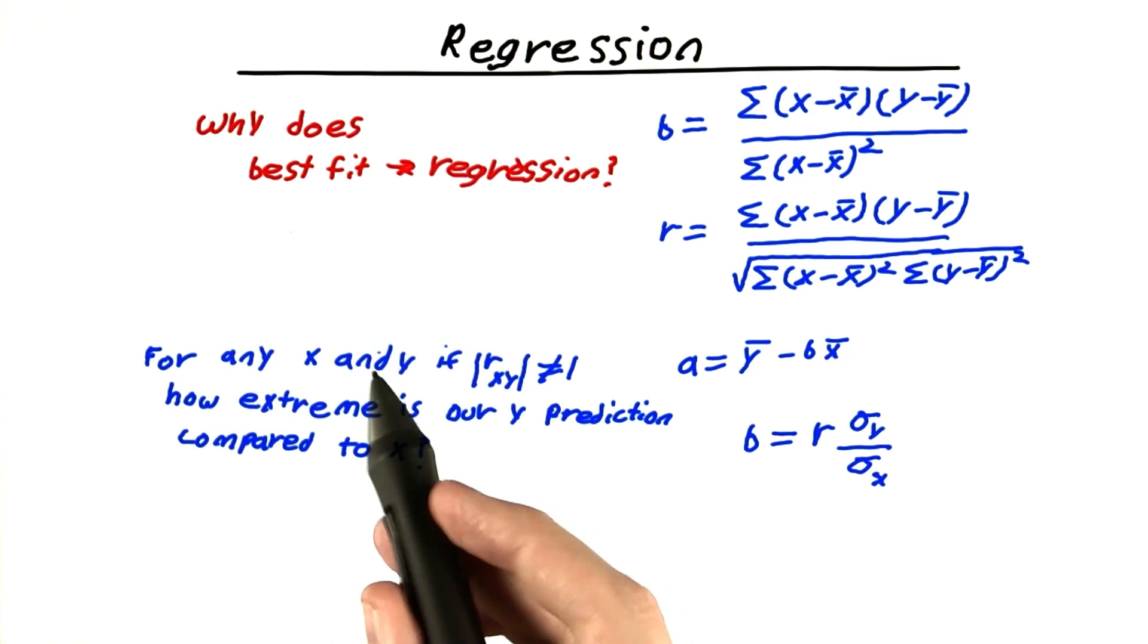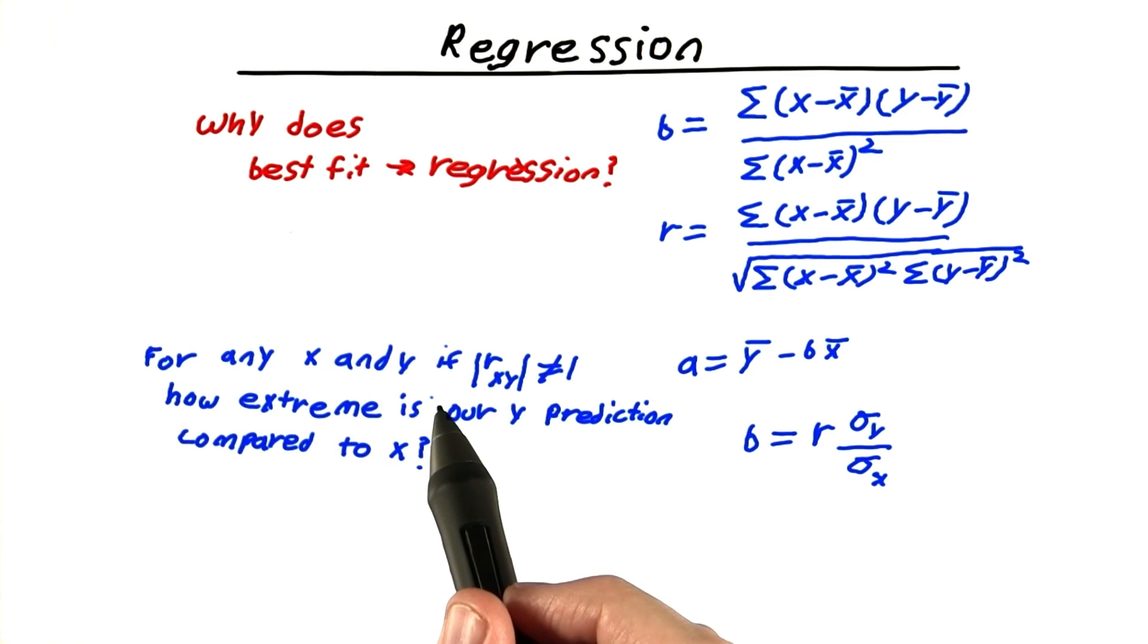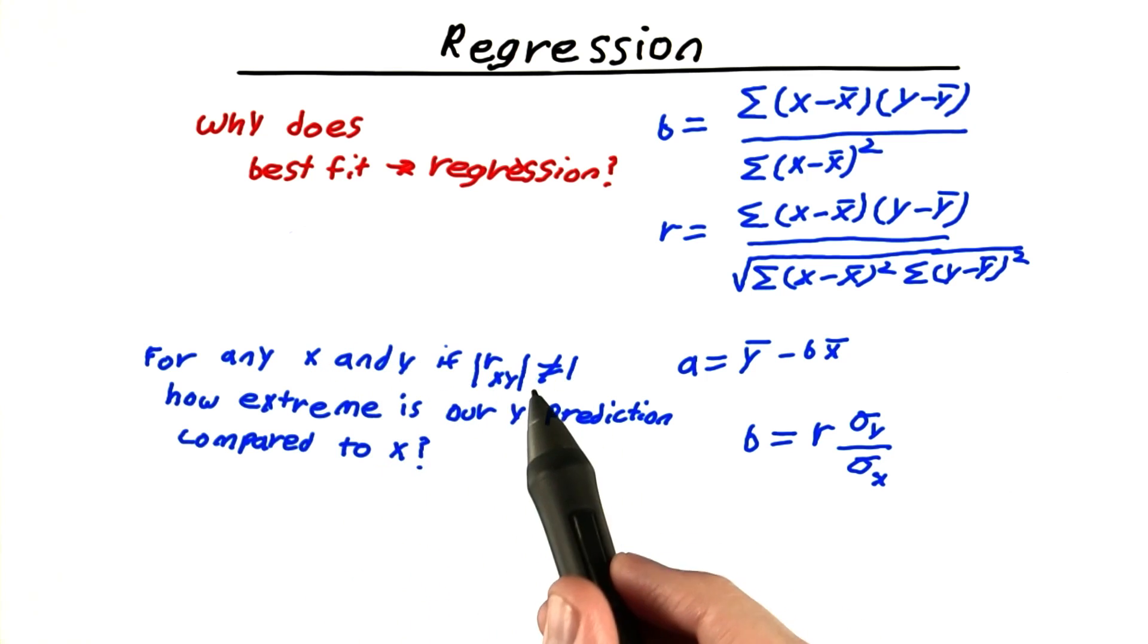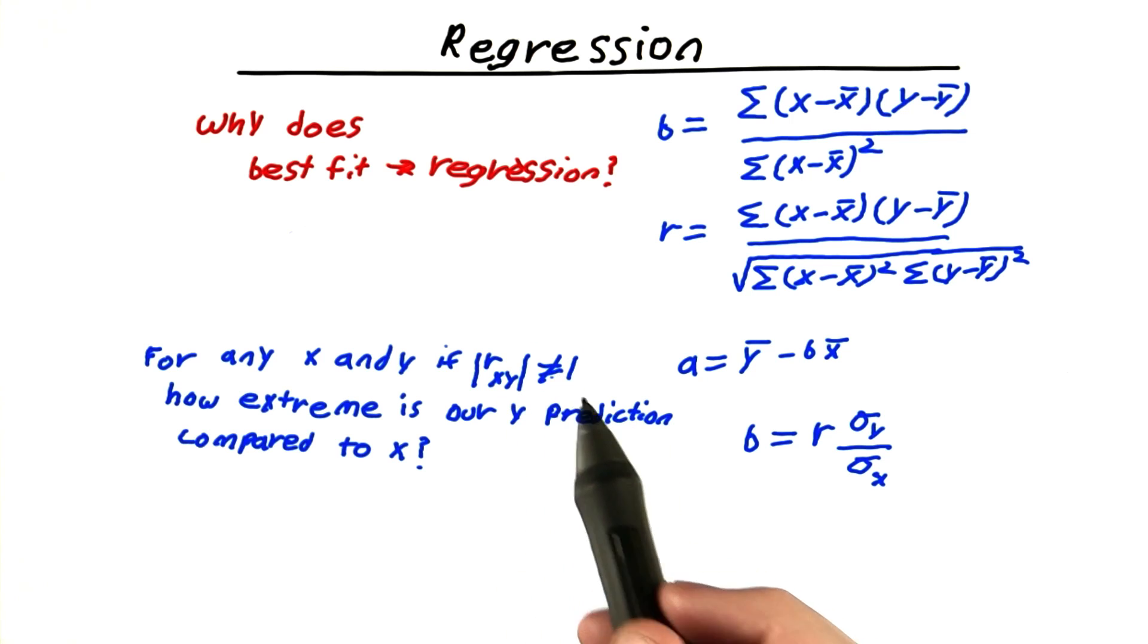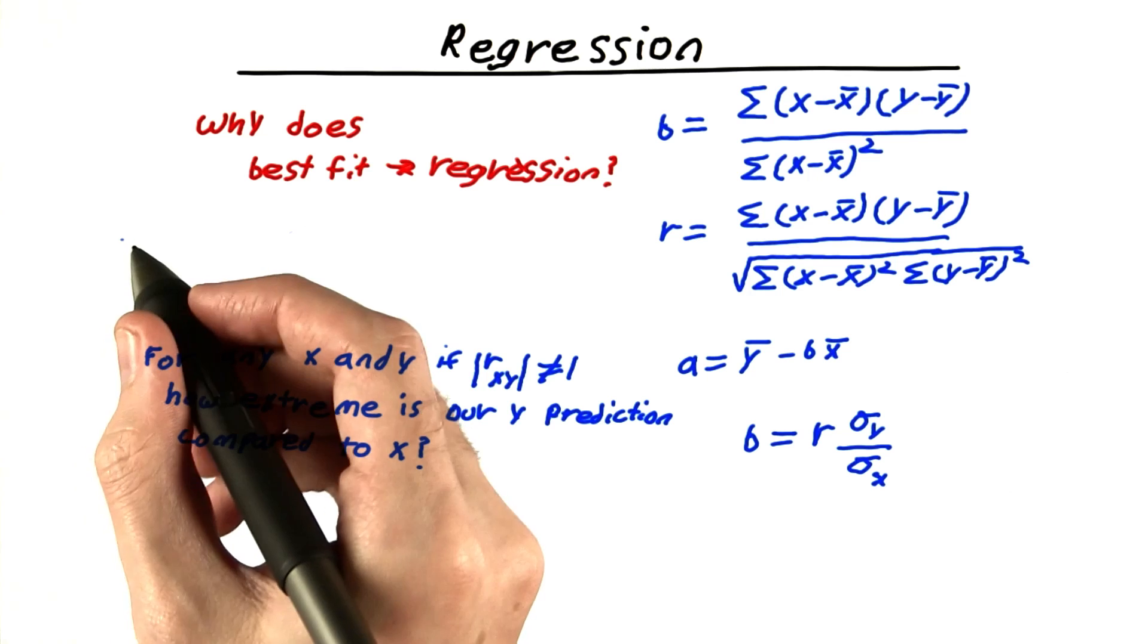So I'd like you to tell me, for any two variables, x and y, if they're not perfectly related, that is if the absolute value of their correlation is not 1, how extreme is our y prediction compared to x? And by extreme, to be a little more precise, I mean this.